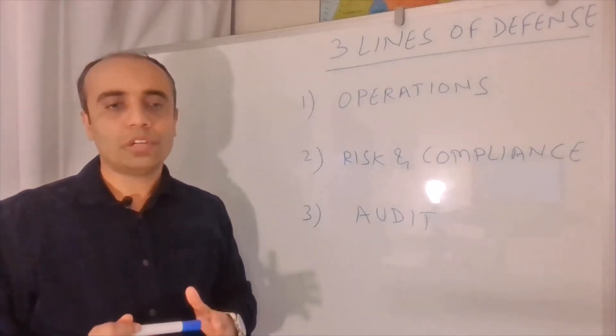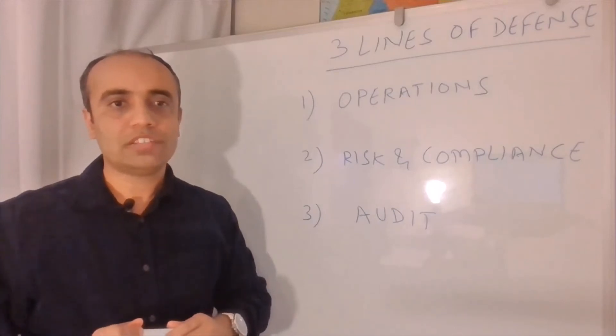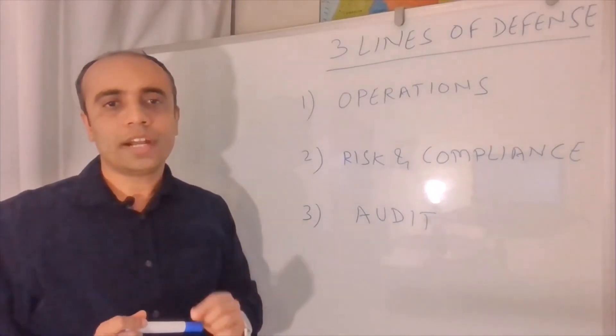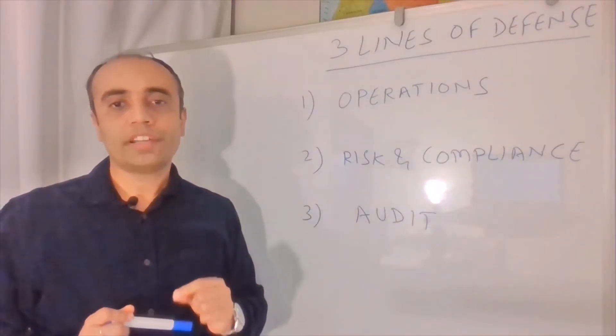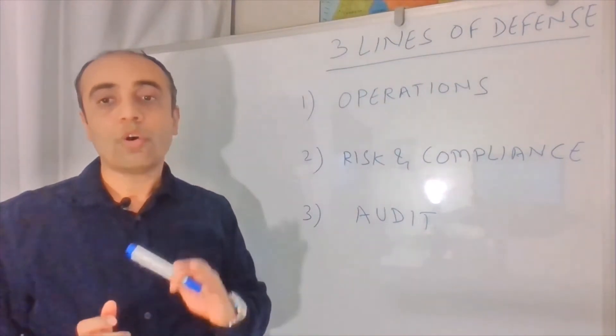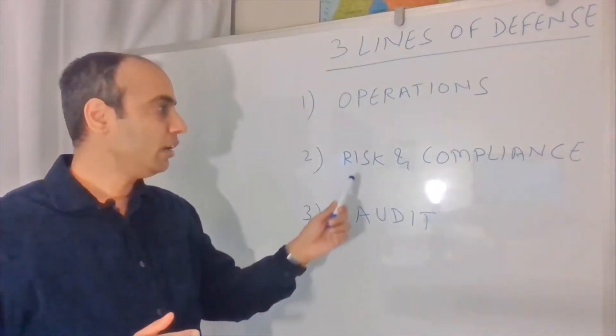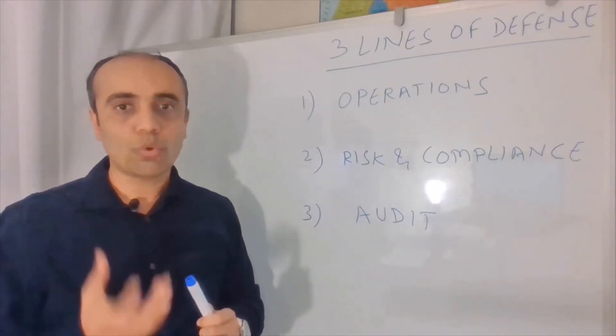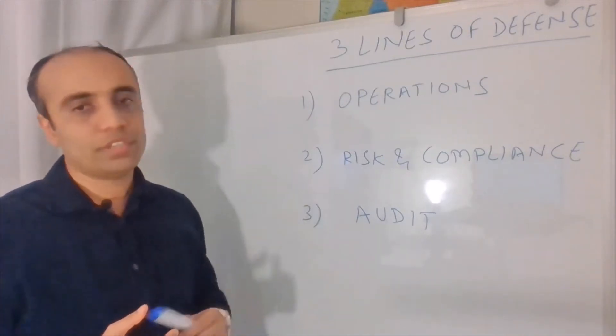Like in our example, let's go back to that example of sales and marketing. The procedures and guidance which the sales and marketing teams are supposed to follow, they're all drafted, implemented and checked by risk and compliance teams, which is the core job of second line of defense.